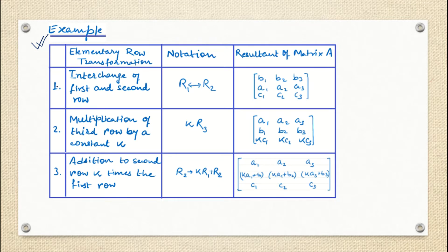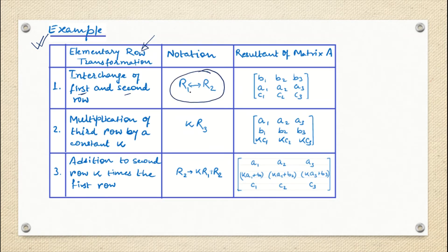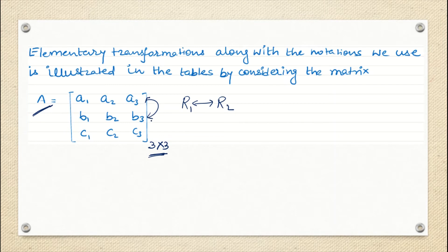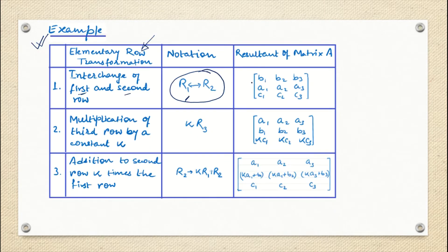There are three elementary row operations. The first operation is interchange of the first and second row — you can interchange any two rows. This is denoted as R1 ↔ R2. The matrix which started with A's in the first row and B's in the second row will now have the B-row elements in the first row and the A-row elements in the second row, with the third row unchanged.